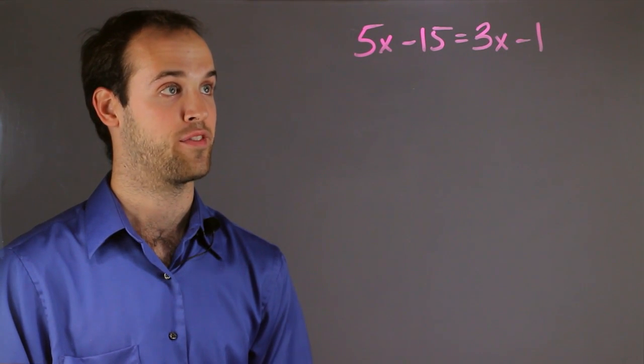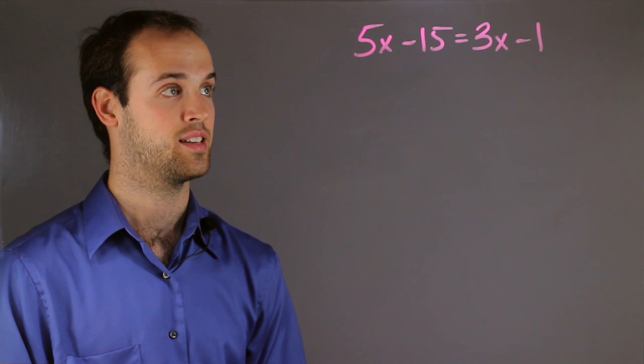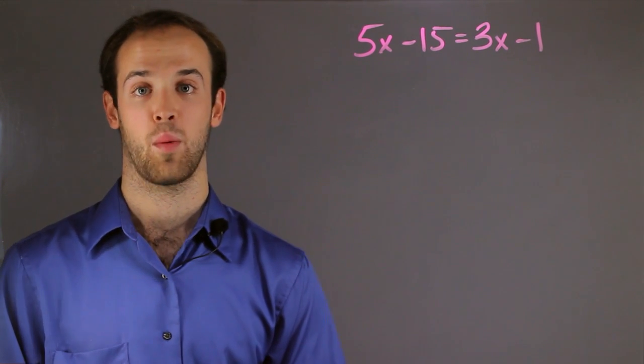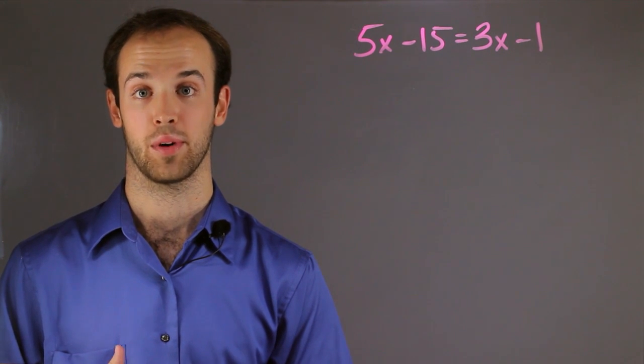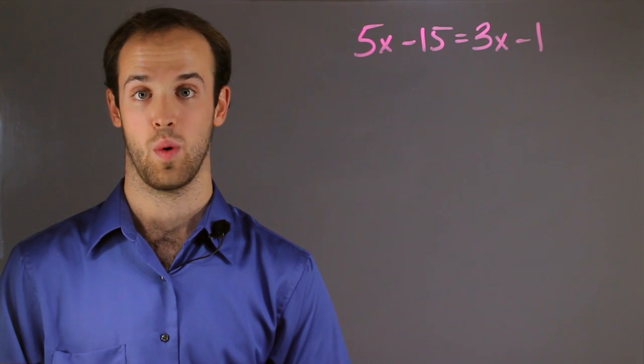Let's take a look at our equation. We have 5x minus 15 equals 3x minus 1. The first thing I want to do is get all my constants, or regular numbers, onto the right side of the equation.